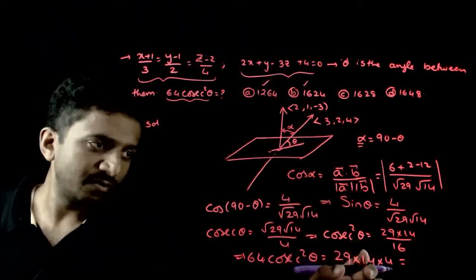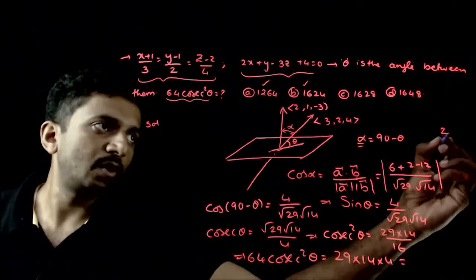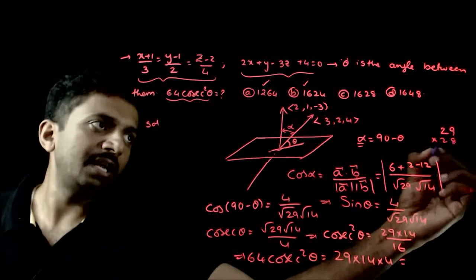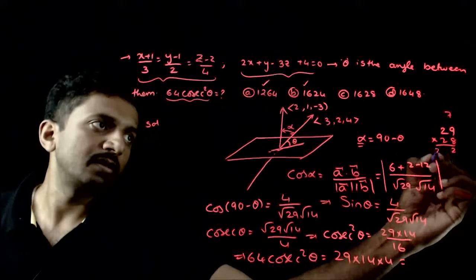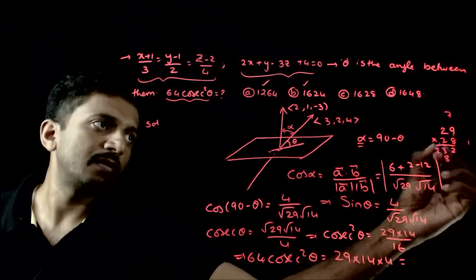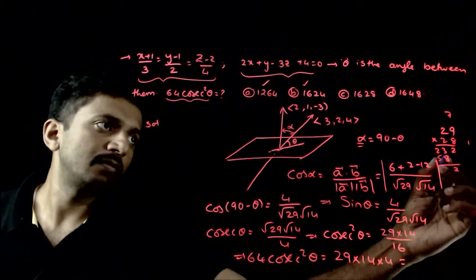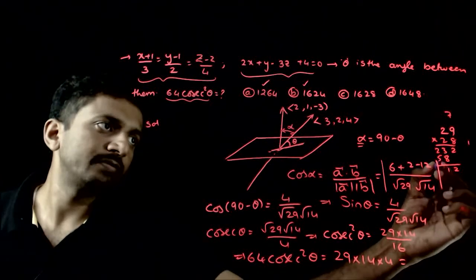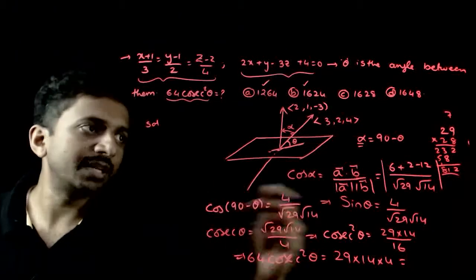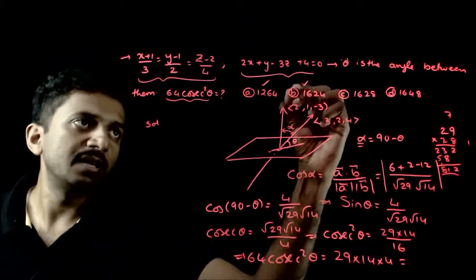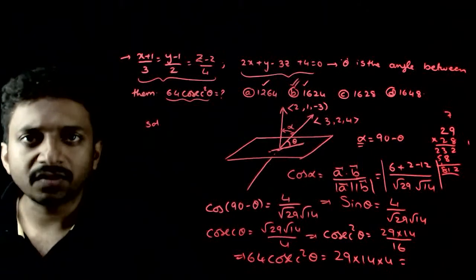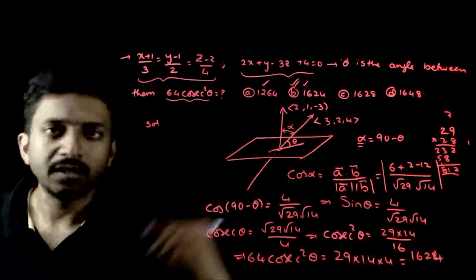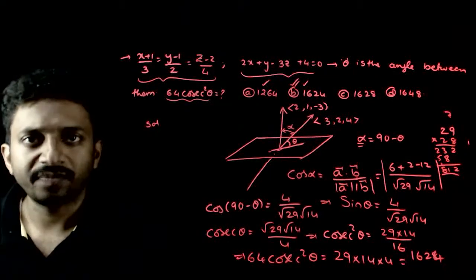These two are wrong. So you just need to multiply this, 29 into 8, 12 into 2, that is 16, 24 is the answer. So option b is the right answer to this question. That will be the right answer, thank you.